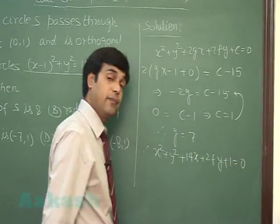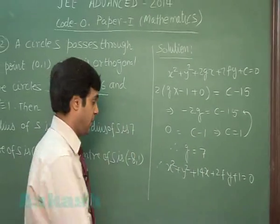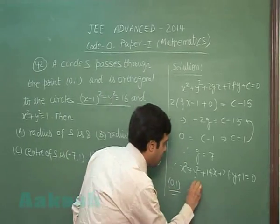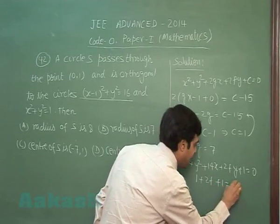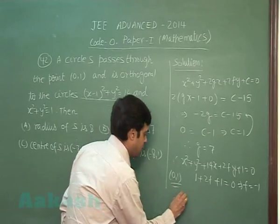This is passing through (0,1), so let's pass it from the point (0,1) to get 1 + 2f + 1 = 0, or f = -1. Substitute it back.